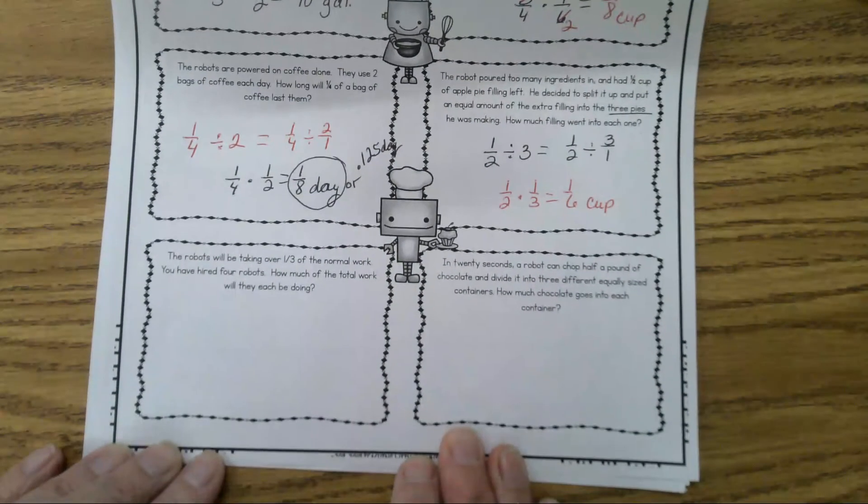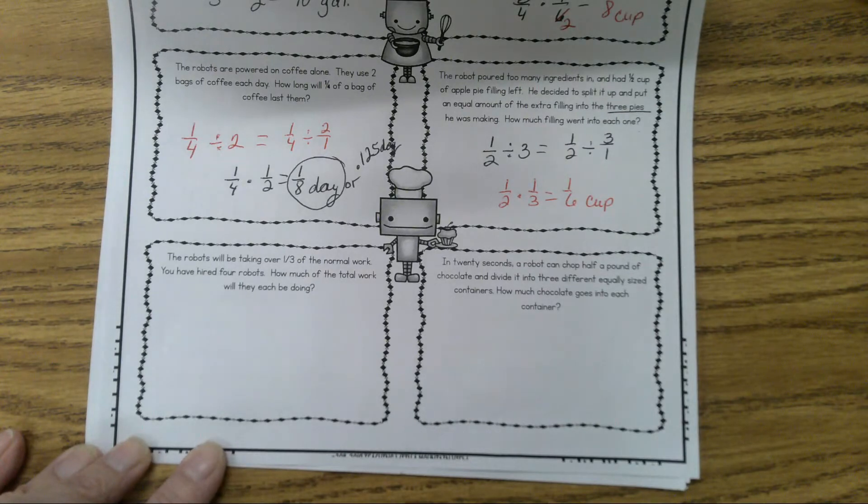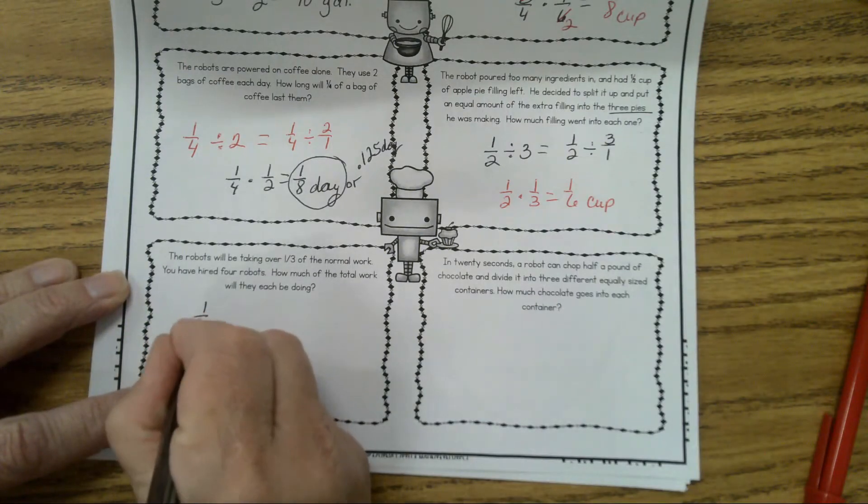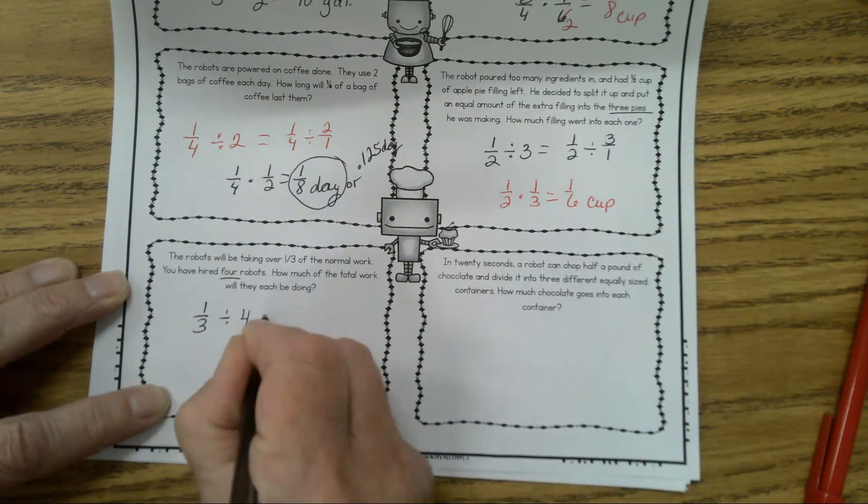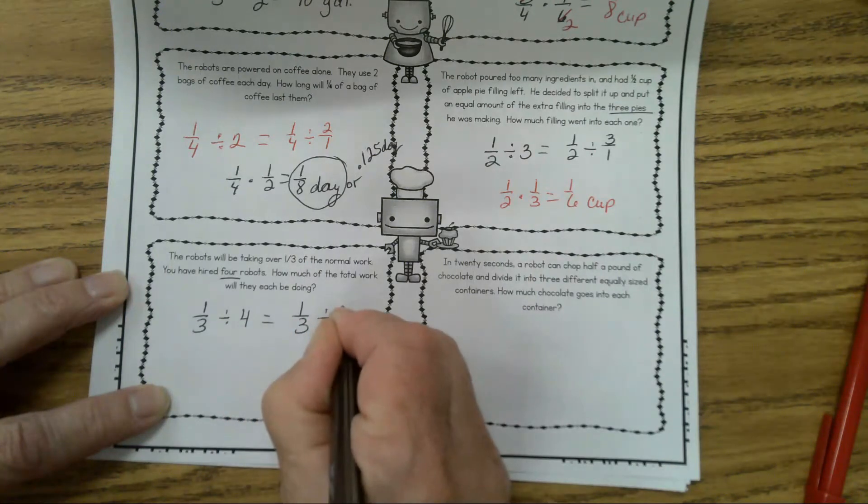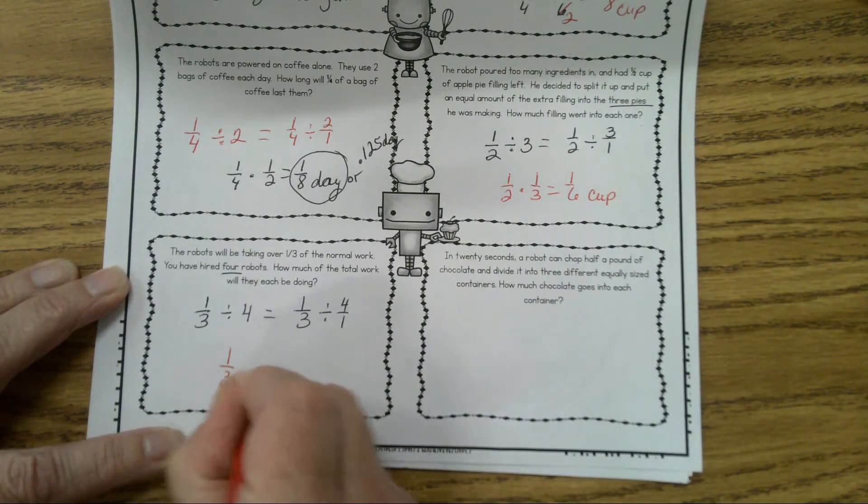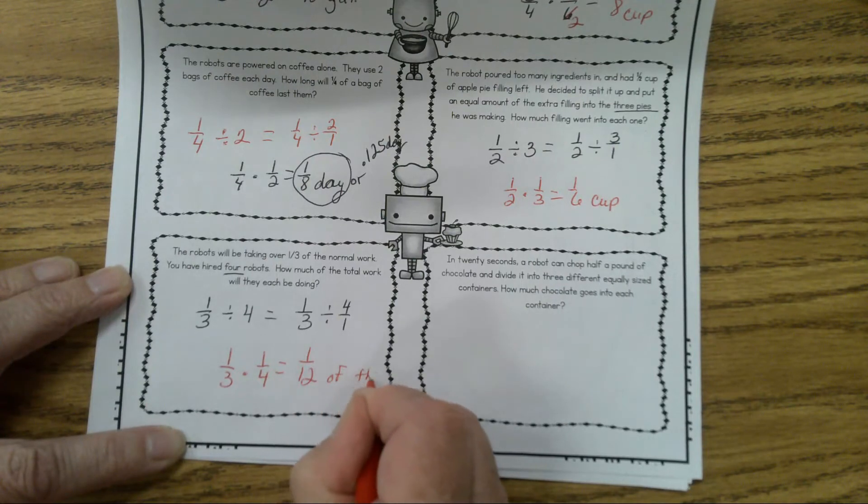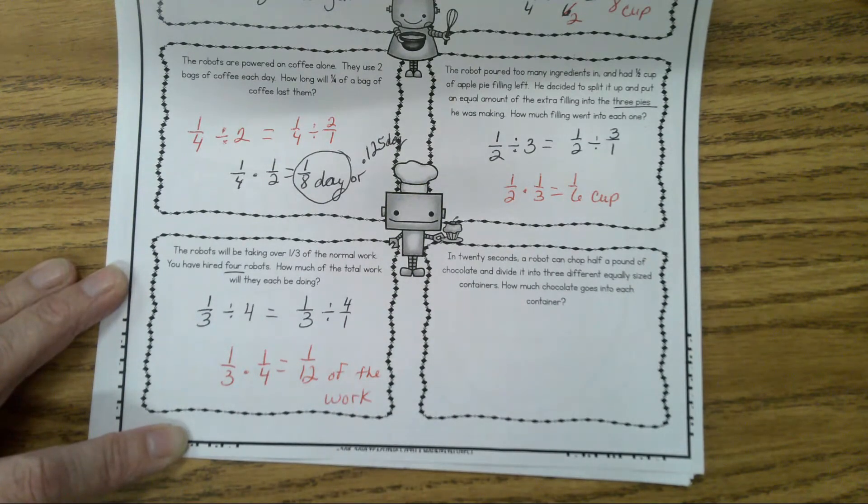Heidi, would you like to do the next one? The robots will be taking over 1/3 of the normal work. You will have hired 4 robots. How much of the total work will each robot do? So we have 1/3. How many robots are they hiring? Four. 1/3 divided by 4. So that will be 1/3 divided by 4 over 1, which means our multiplication 1/3 times 1/4 equals 1/12 of the work. Any questions? You're all showing your work on these, aren't you? And if you didn't have it right, make sure you fix it.